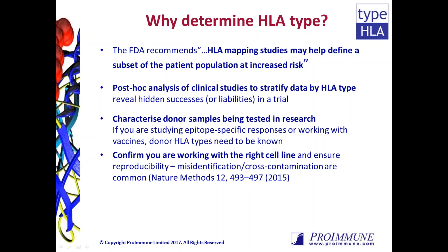If you are working on any epitope-specific immune responses — for example stimulating with peptides, developing T-cell vaccines, or using MHC multimers to track responses — then the HLA types of donors should be known before carrying out experiments. Cell lines can also be HLA typed; it is important to verify that the cells you are working on are what they are expected to be, as cross-contamination and misidentification can occur.